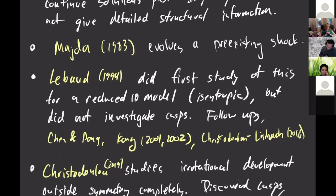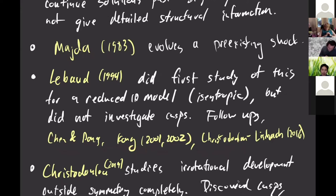LeBeau, in her thesis in 1994, was the first to consider the problem of evolving forward from the initial pre-shock, in an isentropic model — the P-system — in 1D. She proved the existence of a weak solution emanating from that data with jump growing with a certain rate in T. But in her work she didn't discuss or keep track of these other singularities born with the shock. Her work has been followed up by other authors who refined the original arguments — some proving uniqueness — working in one space dimension or spherical symmetry. But none of these so far discussed the propagation of these weak cusp singularities.